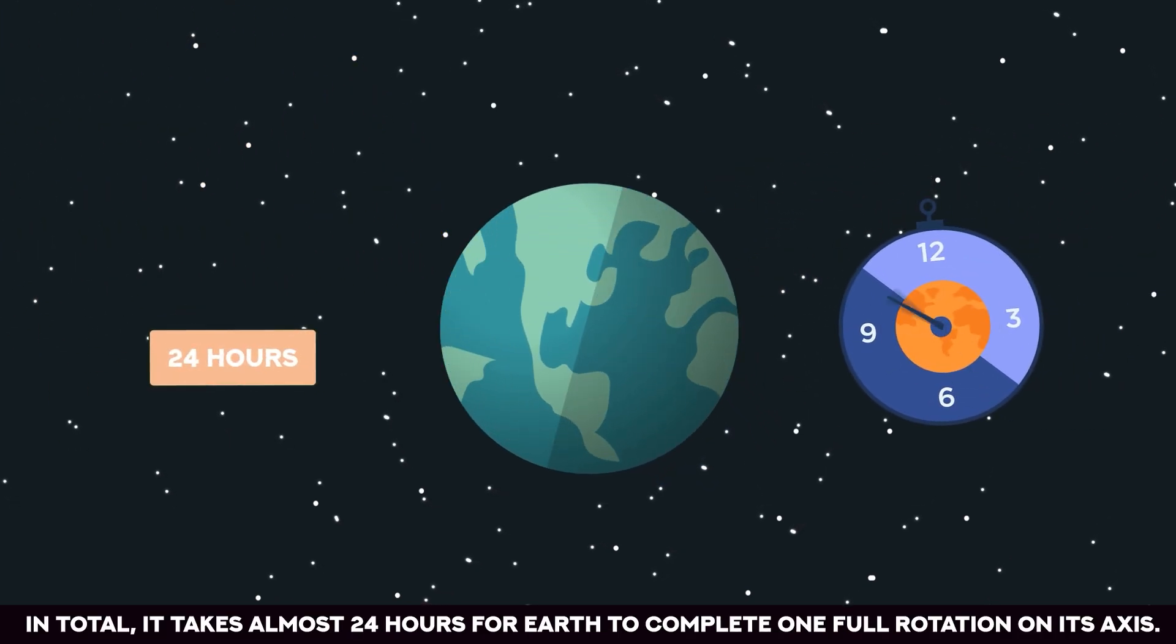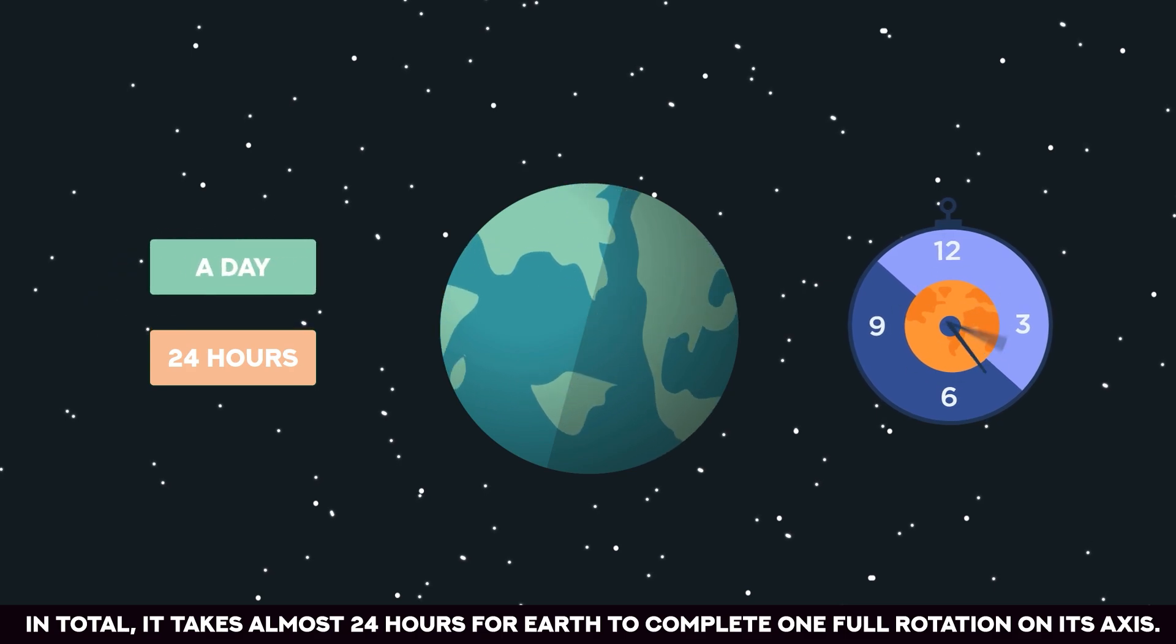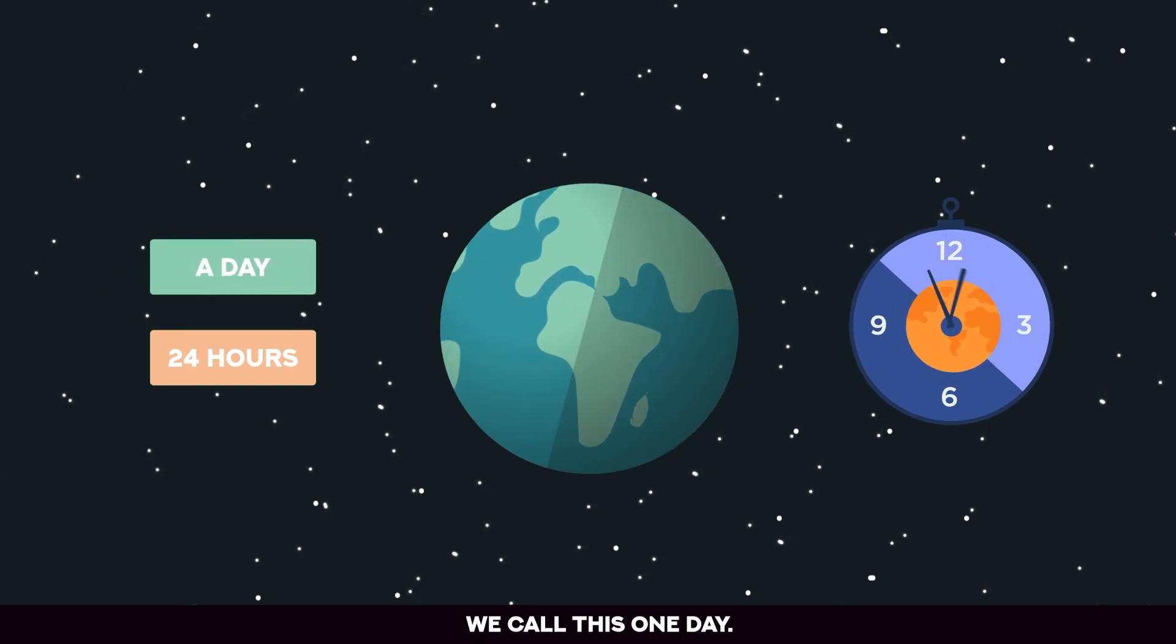In total, it takes almost 24 hours for Earth to complete one full rotation on its axis. We call this one day.